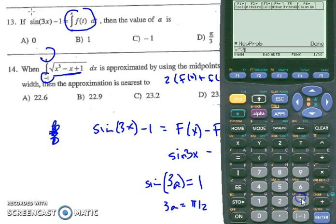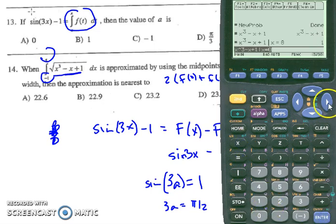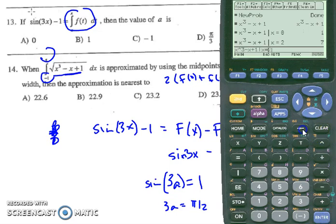So x cubed minus x plus 1, and then I need to evaluate this at 0, 2, and 4. So let's scroll to the end and do such that x equals 0, x equals 2, and x equals 4.